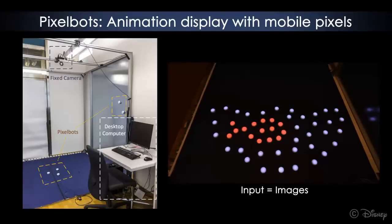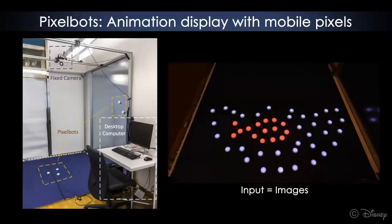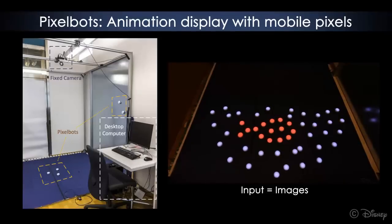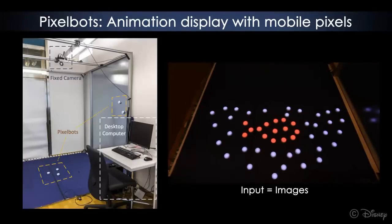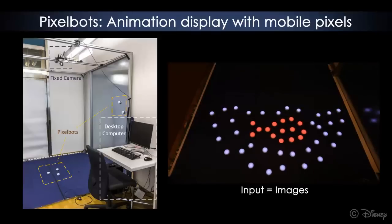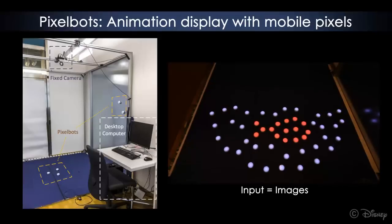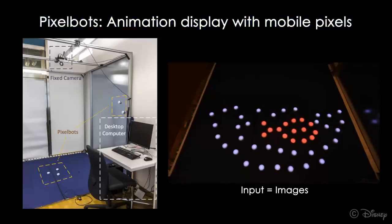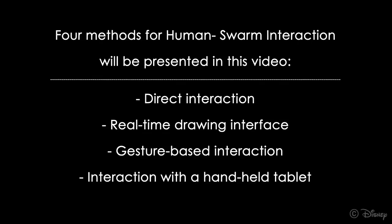In previous works we have developed a display formed by tens of small robots. They're tracked by an overhead camera and controlled from a central computer. In this video we show four methods for human swarm interaction.